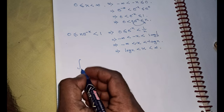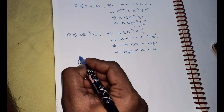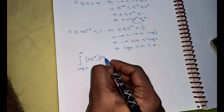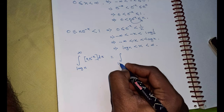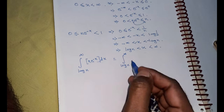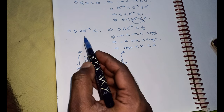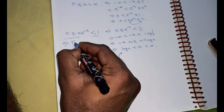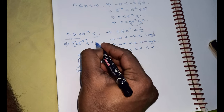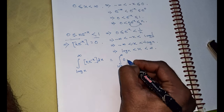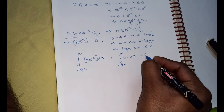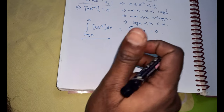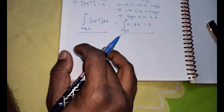If we calculate the integral from log of n to infinity of n times e to the power minus x dx, then the value of n times e to the power minus x lies between 0 and 1, so the greatest integer function of n times e to the power minus x equals 0. Therefore this integration is 0 times dx, which equals 0. This was the first broken integral.